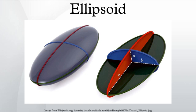Volume and surface area — Volume: the volume of the internal part of the ellipsoid is given by a standard formula. This equation reduces to that of the volume of a sphere when all three elliptic radii are equal, and to that of an oblate or prolate spheroid when two of them are equal. The volume of an ellipsoid is two-thirds the volume of a circumscribed elliptic cylinder. The volume of an ellipse of dimension higher than three can be calculated using the dimensional constant given for the volume of a hypersphere.